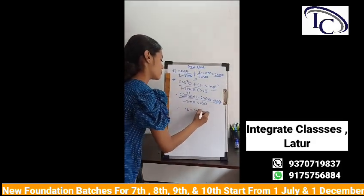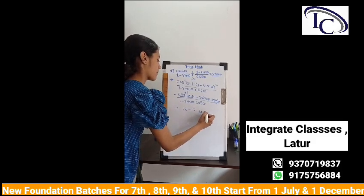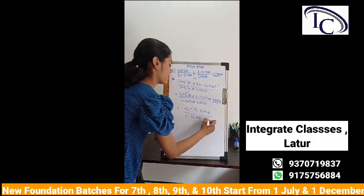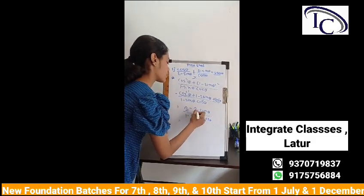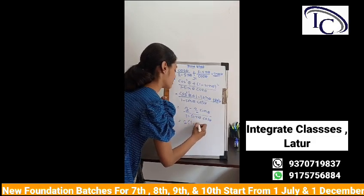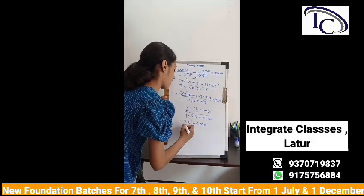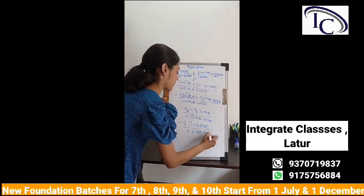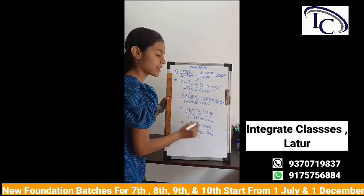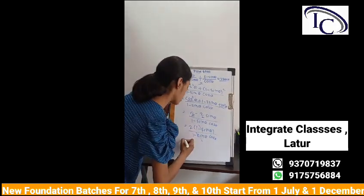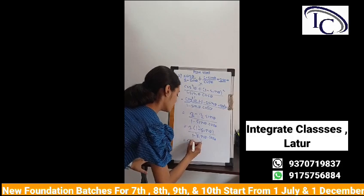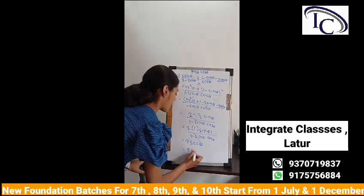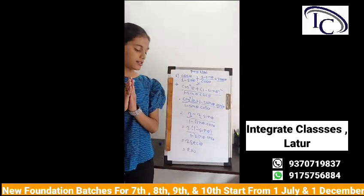We now have 2 − 2 sin θ, divided by (1 − sin θ) into cos θ. Taking 2 common from the numerator gives 2(1 − sin θ). The (1 − sin θ) in the numerator and denominator cancel, leaving us with 2 / cos θ, which equals 2 sec θ. Hence proved — LHS = RHS.